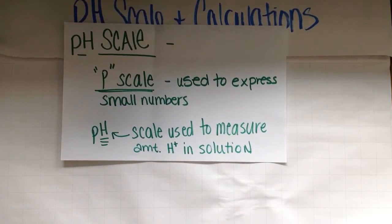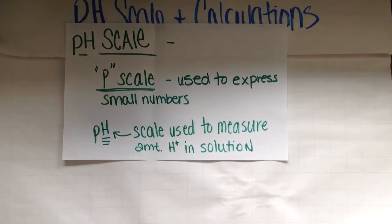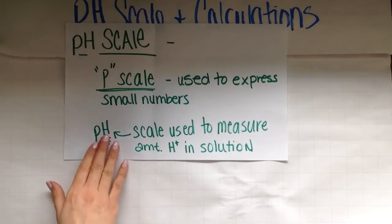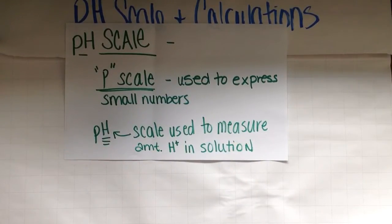So where do we get the P in pH? P scales are used by scientists to express or to measure things that are in small numbers. And so our amount of H plus concentration in our beakers are extremely small amounts. So we can use a pH scale and it helps us measure things in better numbers.